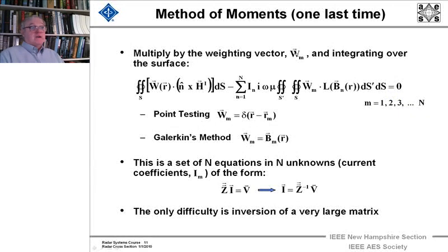Now multiplying by a weight vector and integrating over the surface, this is what we get, this long expression. And there are two different methods, point testing method and Galerkin's method. The Galerkin method is used almost all the time, and it gives a much more accurate, better solution. I'm by no means an expert in computational electromagnetics. But I asked my son, Andy, who's a grad student in computational EM, why the Galerkin method is used. And he says it's just more accurate.